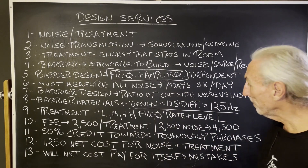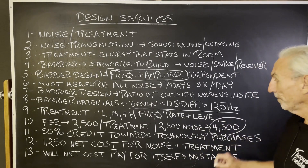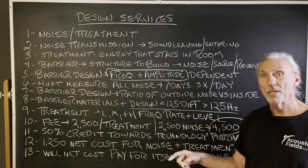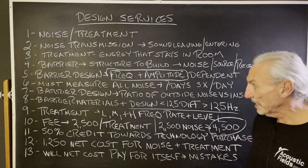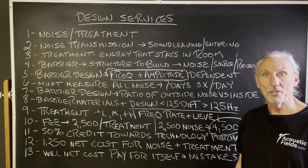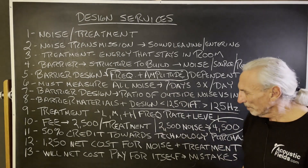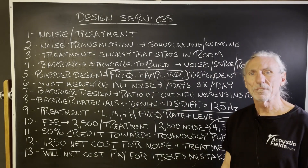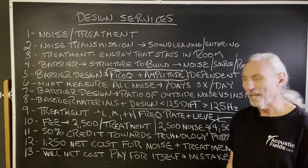Our fees are $2,500 for treatment and $2,500 for noise. If you need both, it's $4,500. But we give you a 50% credit towards our foam and carbon technologies that we'll spec into the design for you. So your net costs are $1,250 for noise and $1,250 for treatment. Do you believe that knowing what you're going to do will save you $1,250 in mistakes? I guarantee it'll save you at least that much.